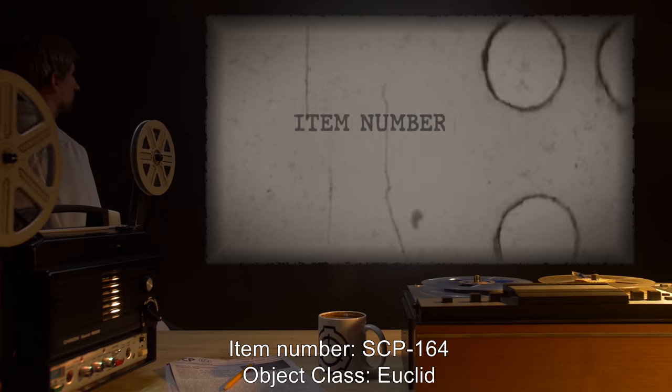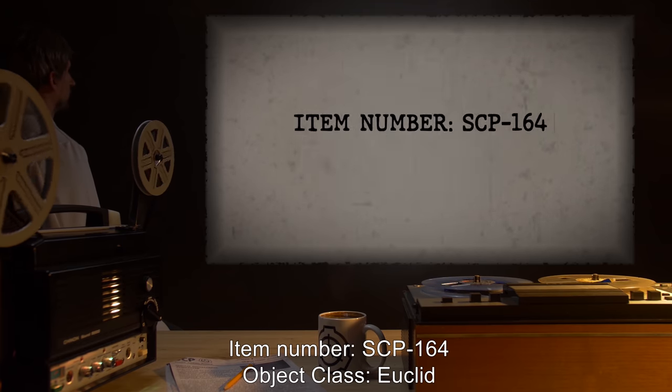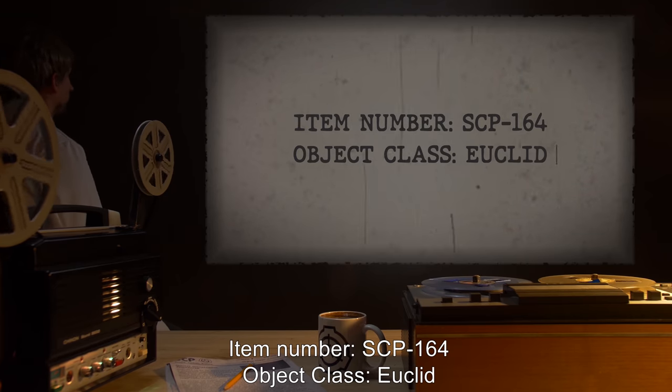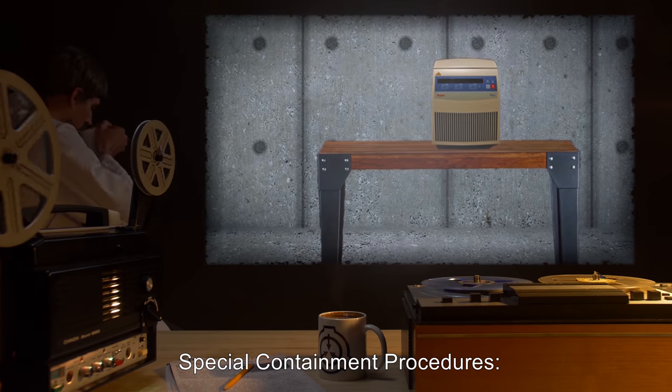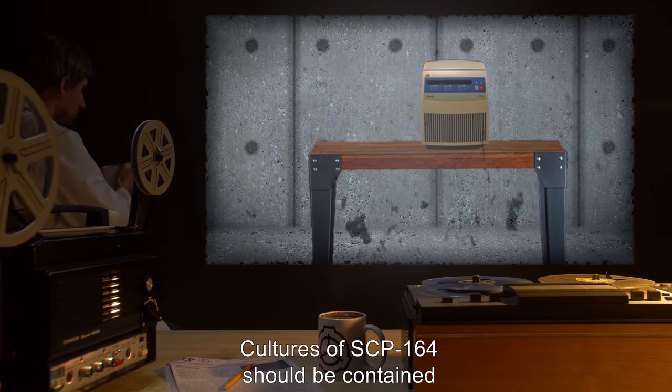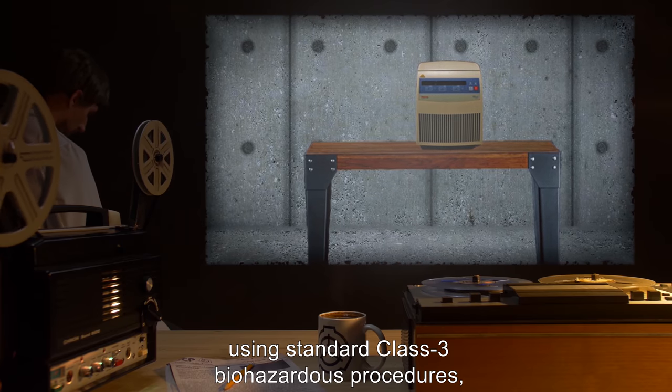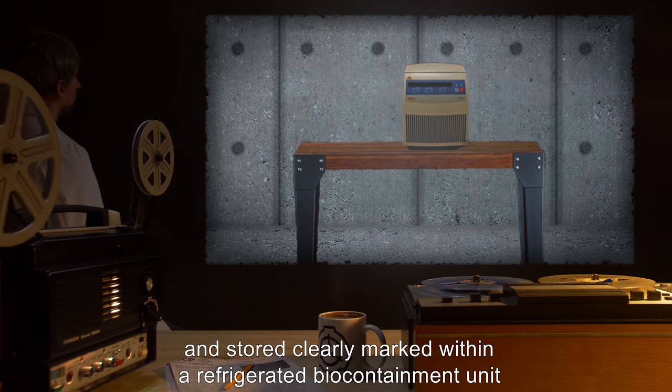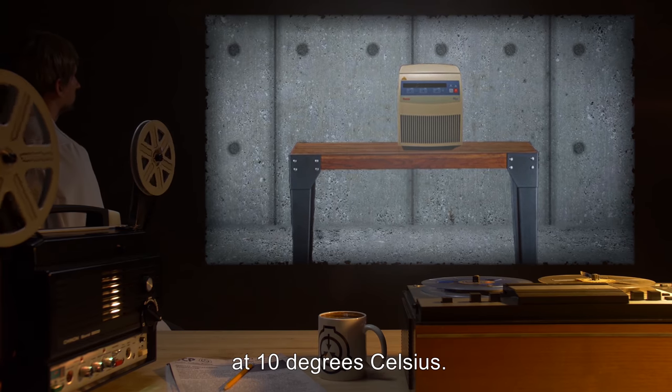Item number SCP-164. Object Class: Euclid. Special Containment Procedures: Cultures of SCP-164 should be contained using Standard Class 3 Biohazardous Procedures and stored clearly marked within a refrigerated biocontainment unit at 10 degrees Celsius.